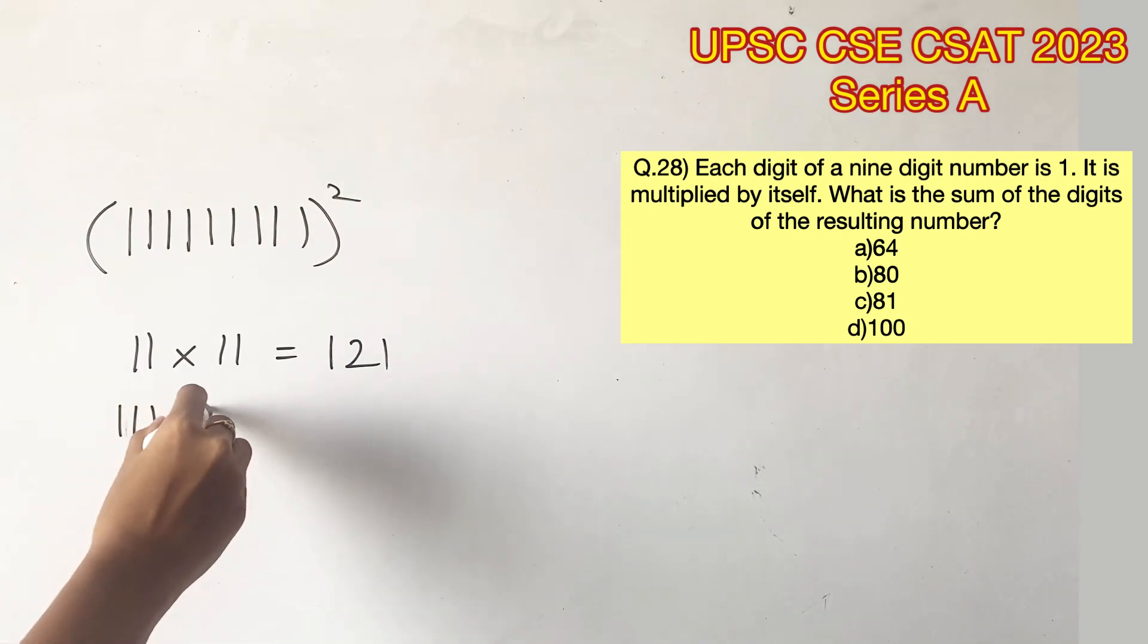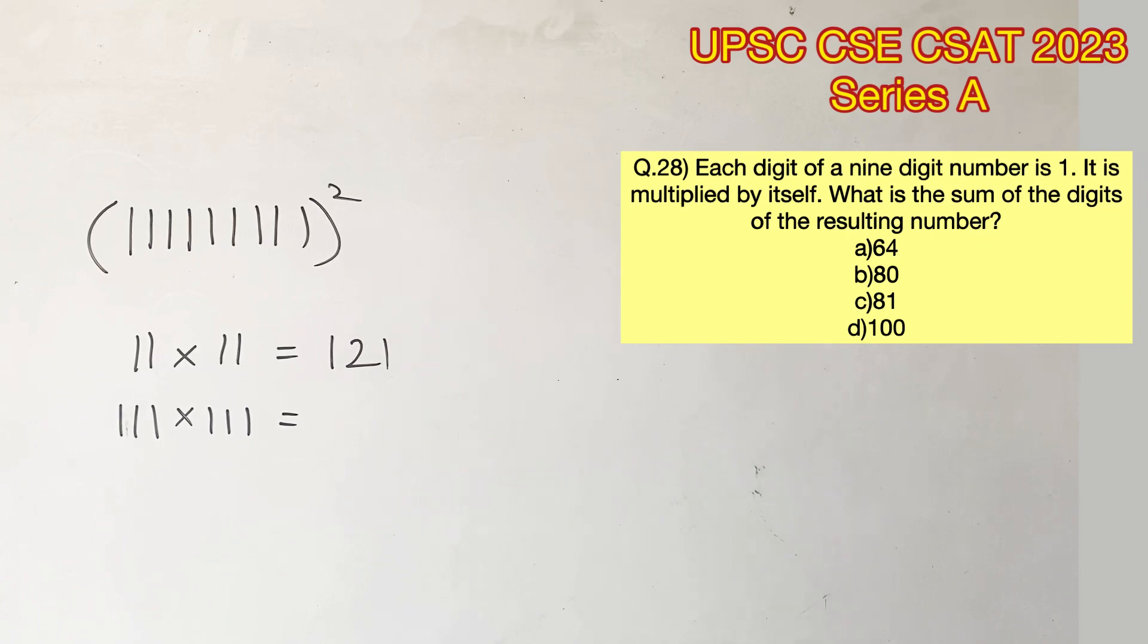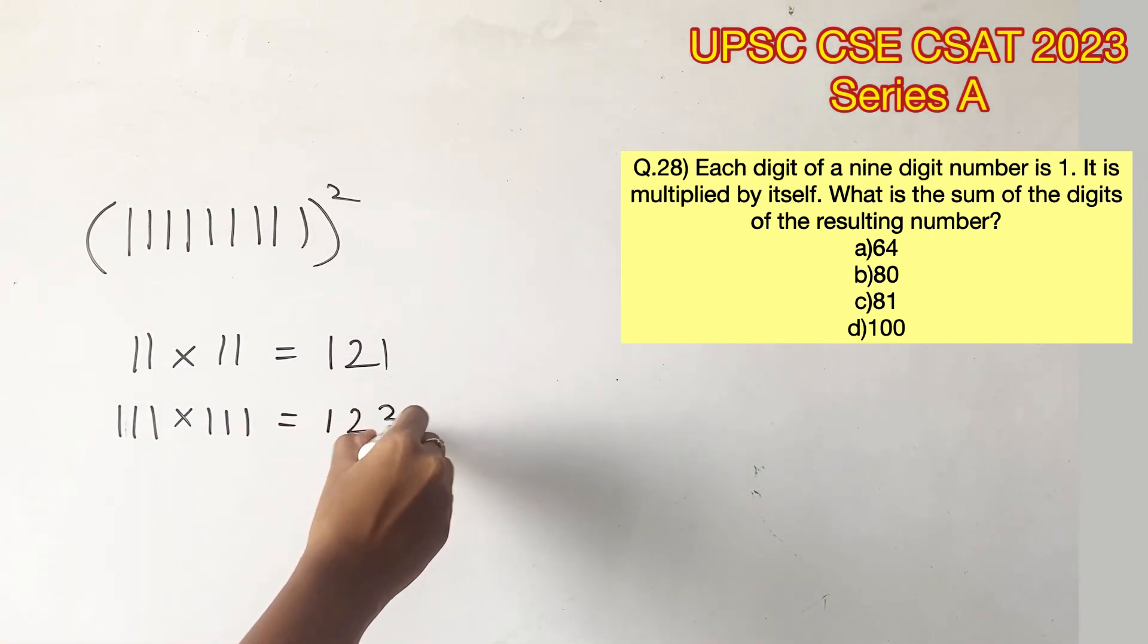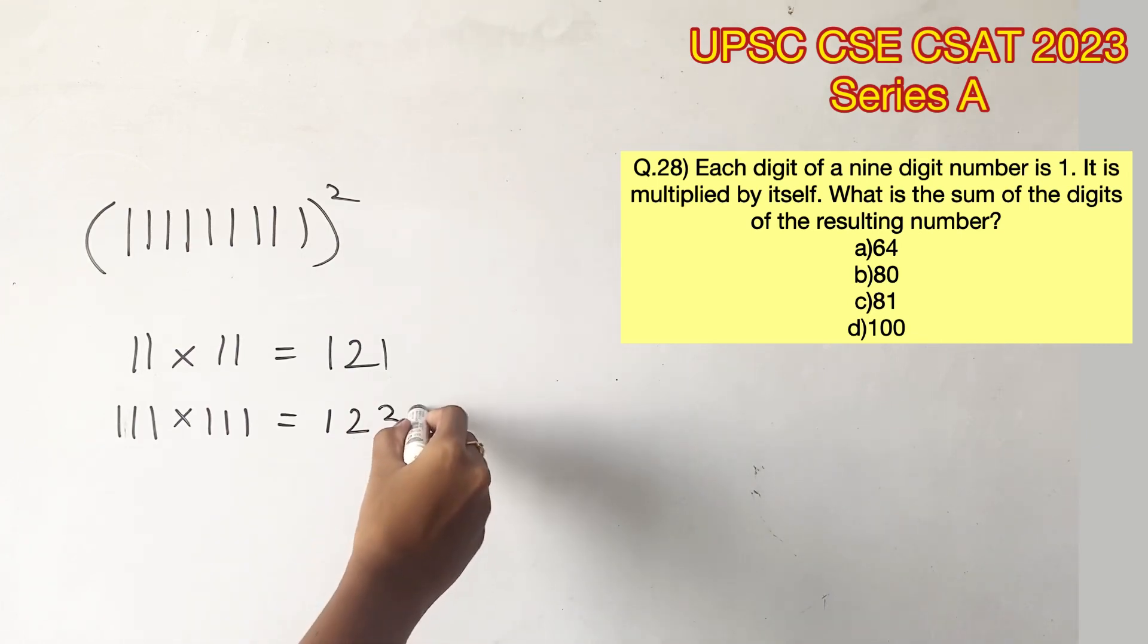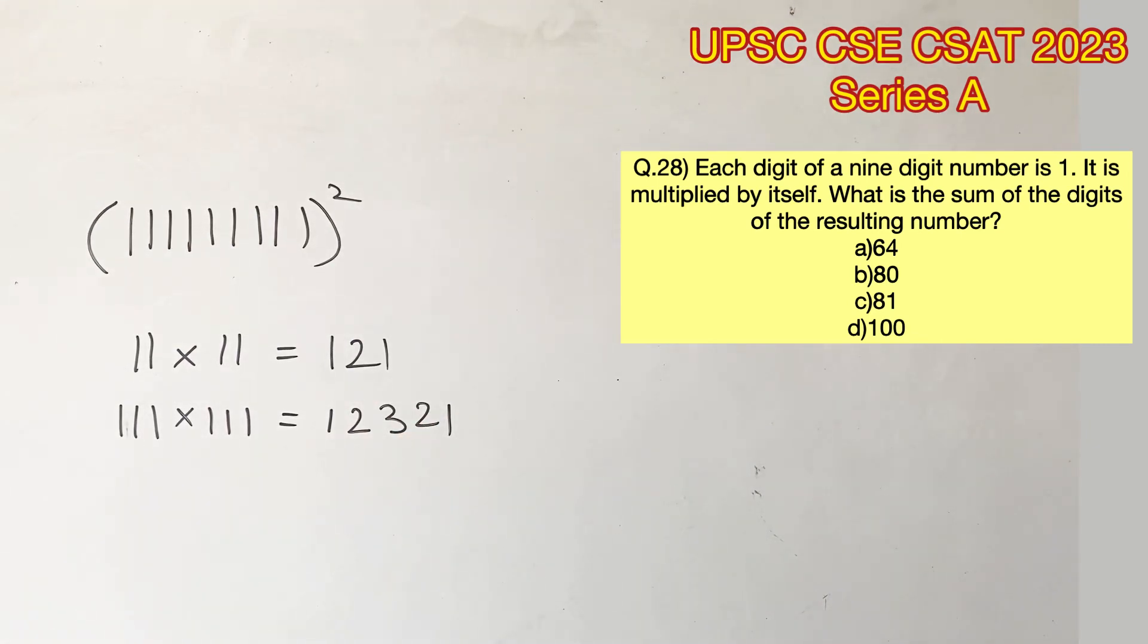Similarly, if you take 111 and multiply it by itself, you will get 12321. So basically, since 1 is written 3 times, we are writing 123 and reducing it back to 1. This is the pattern that will follow if you multiply 1's by itself.